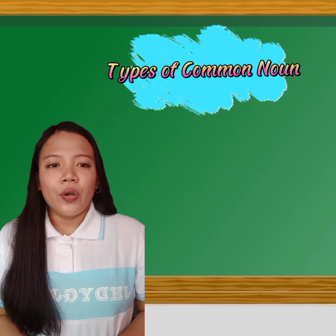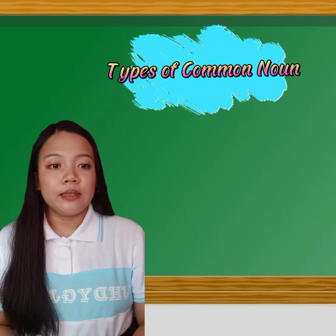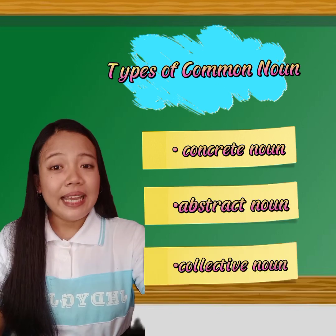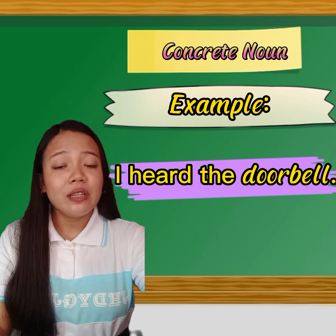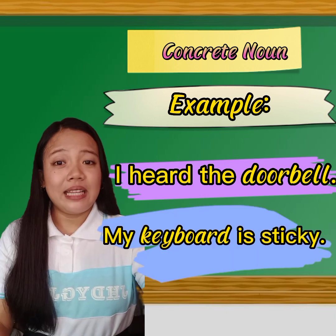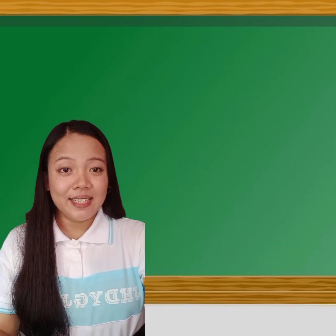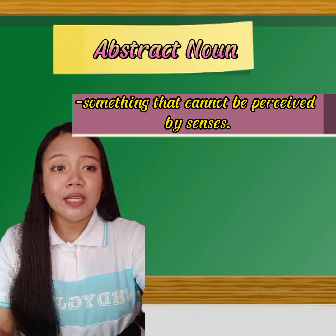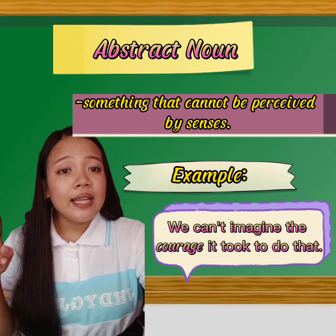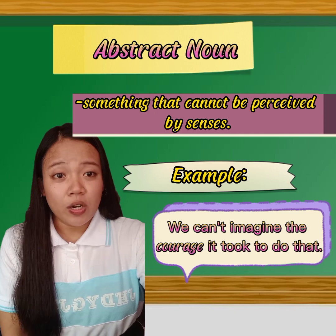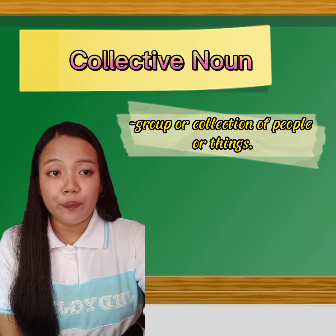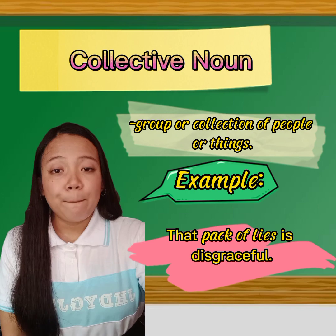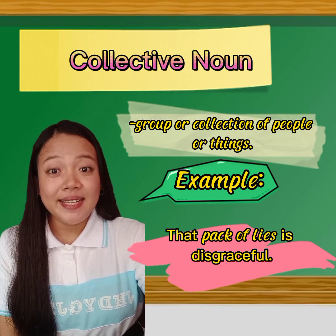So we have here types of common nouns. Common nouns can be broken down into three subtypes: concrete nouns, abstract nouns, and collective nouns. A concrete noun is something that is perceived by the senses — something that is physical or real. For example, I heard the doorbell. My keyboard is sticky. Doorbell and keyboard are real things that can be sensed. Conversely, an abstract noun is something that cannot be perceived by the senses. For example, we can't imagine the courage it took to do that. Courage is an abstract noun — it cannot be seen, heard, or sensed in any way, but we know it exists. On the other hand, a collective noun denotes a group or collection of people or things. For example, the pack of lies is disgraceful. Pack of lies used here is a collective noun.